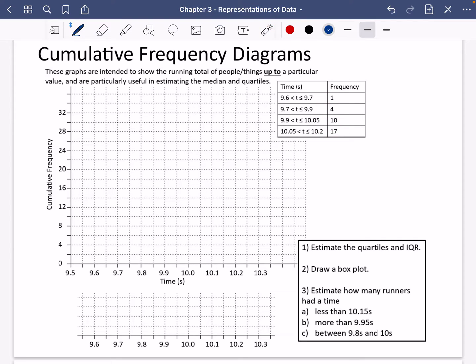So unsurprisingly, to do a cumulative frequency diagram, we're going to have to work out the cumulative frequencies. So that's going to go one, add on the four to get five, add on the 10 to get 15, and add on the 17 to get 32.